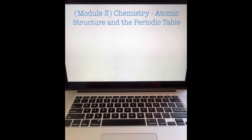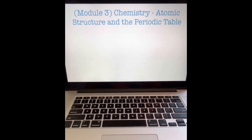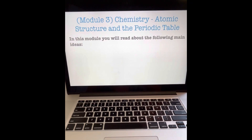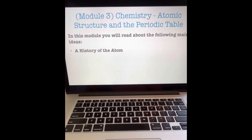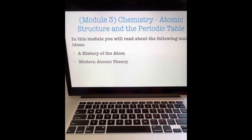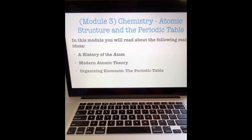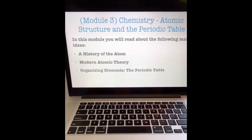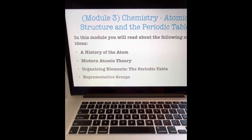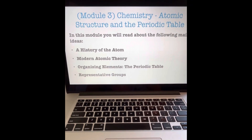Moving right along. We are starting Module 3 today — Chemistry: The Atomic Structure and the Periodic Table. We plan on discussing a few main ideas in this module: The History of the Atom, Modern Atomic Theory, Organizing Elements in the Periodic Table, and Representative Groups.